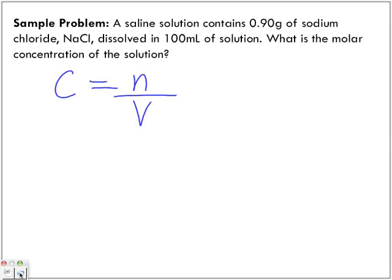Now, our number of moles, do we have that? We have a periodic table, right? So we can convert our mass into the number of moles. So what do we need to find? Molar mass of NaCl.